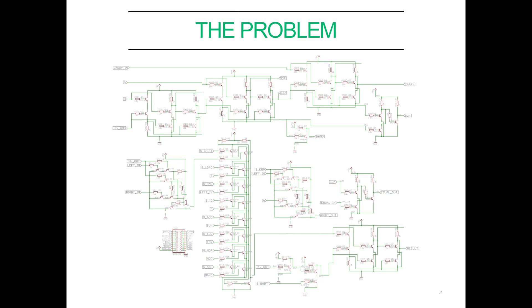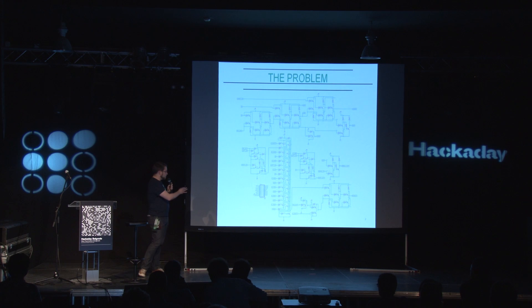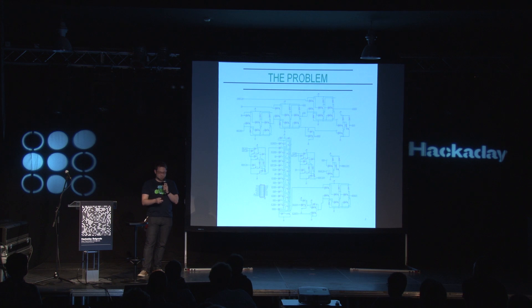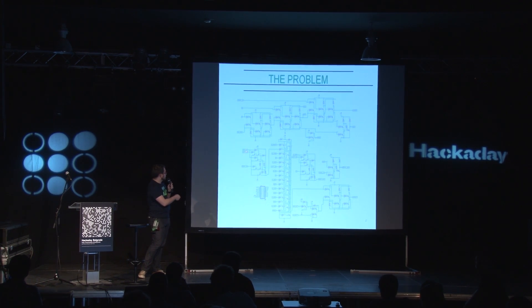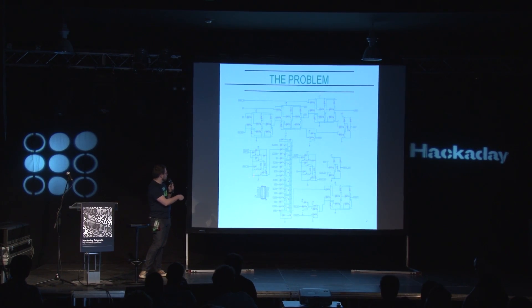This is a small — a very small — part of my processor. This basically lets me add two bits together. It's not really messy, but it's kind of hard to read, right? There's some copy-paste going on here, and there are lots of wires crossing and so on. And I really hate copy-paste when I develop software.